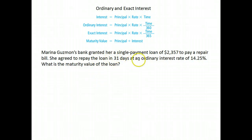Marina Guzman's bank granted her a single payment loan for $2,357 to pay a repair bill. She agreed to pay the loan in 31 days at ordinary interest. The rate was 14.25%. This asks, what's the maturity value of the loan? The maturity value of the loan means how much will you end up paying in the end when you pay for the item and your interest.